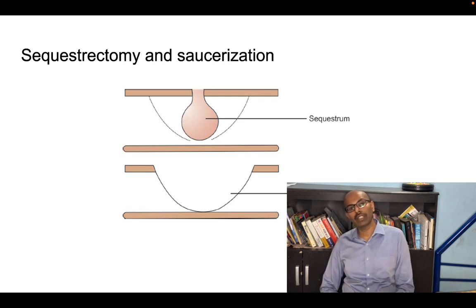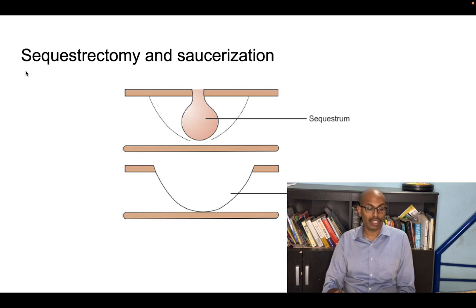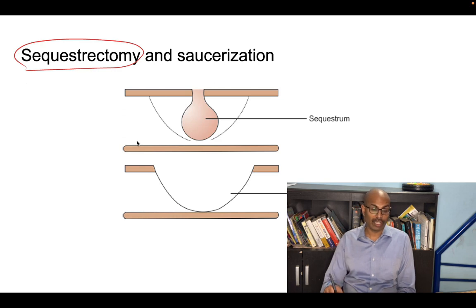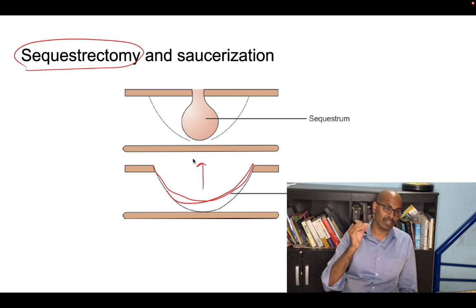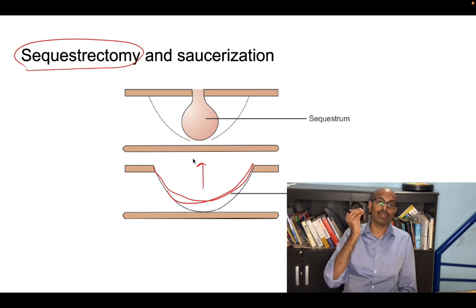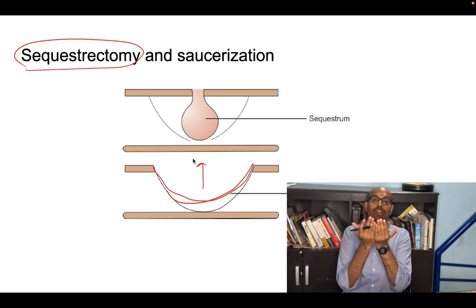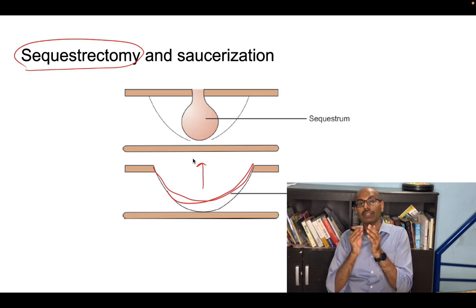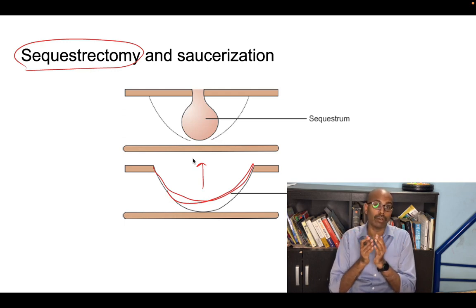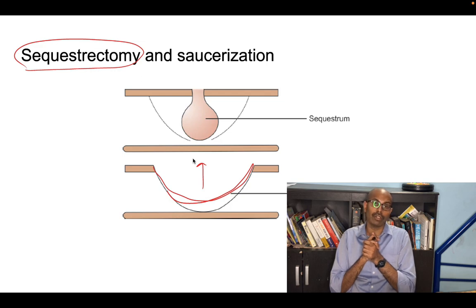Treatment involves sequestectomy — removing all dead, non-viable tissue — followed by saucerization, creating a cavity to allow discharge of pus and infective material. To recap: sequestrum is a dead piece of bone surrounded by granulation tissue; involucrum is new bone formation walling off the infected area; cloaca are openings in the involucrum through which discharge occurs. Thank you for listening. This is Plexus Ortho.